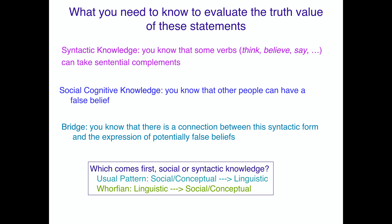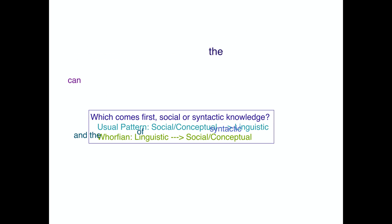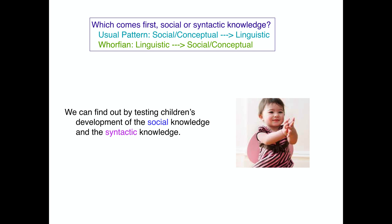The question is: which comes first — the social cognitive knowledge or the syntactic knowledge? Usually we think the conceptual knowledge comes first and you just try to hook the linguistic form up to it. A Whorfian — or at least Neo-Whorfian — idea would be that the linguistic form comes first and helps you augment your reasoning ability, letting you imagine something you couldn't previously imagine: namely, that other people can have beliefs that may be potentially false. We can find out by testing children's development of the social knowledge and the syntactic knowledge linked together with these constructions.